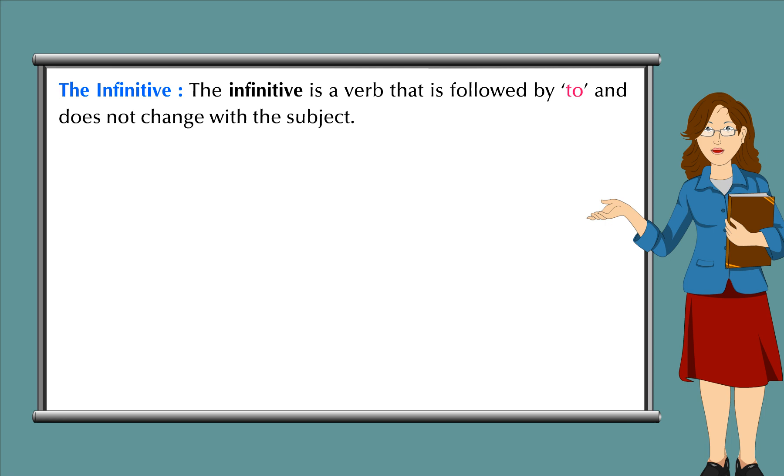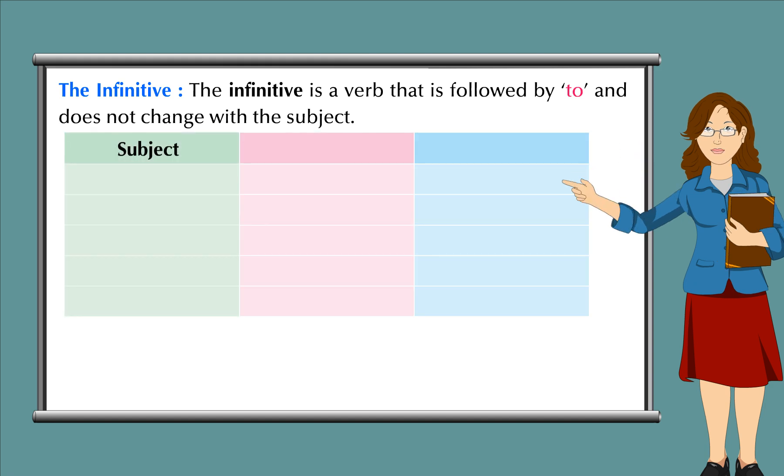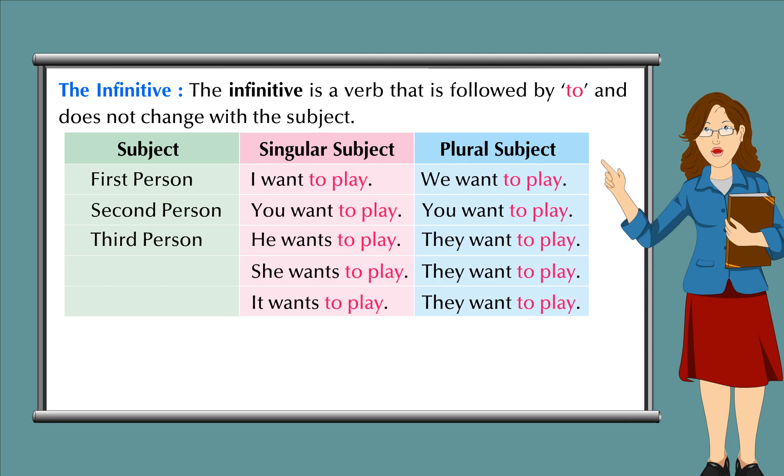The infinitive: The infinitive is a verb that is followed by 'to' and does not change with the subject. First person: I want to play, we want to play. Second person: you want to play.